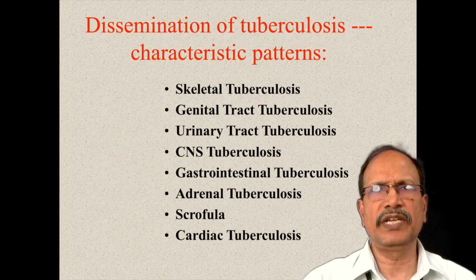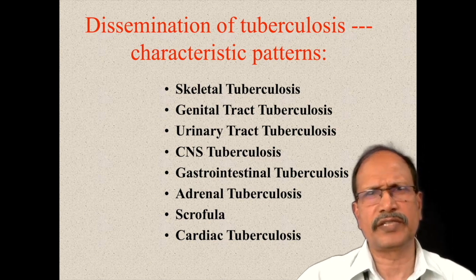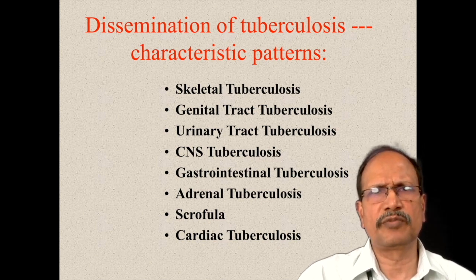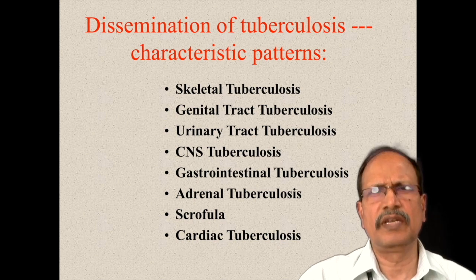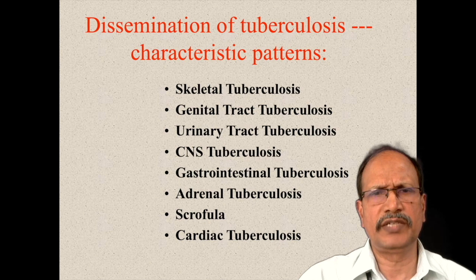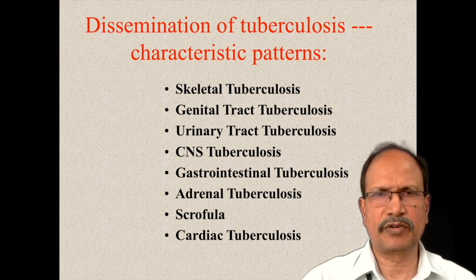Dissemination of tuberculosis produces characteristic patterns depending upon the site of affliction. The organs involved include: skeletal tuberculosis, genital tuberculosis, urinary tract, CNS, GIT, adrenals, scrofula, and cardiac tuberculosis — each with specific features.